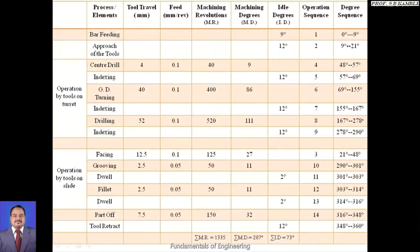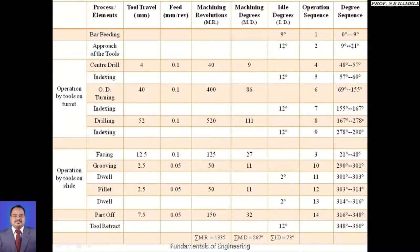Continuing: grooving (10th), dwell of grooving (11th), fillet (12th), dwell of fillet (13th), then parting off as the last operation. For the degree sequence column, we add machining degrees and ideal degrees cumulatively. Bar feeding: 0 to 9°; approach of tool: 9 + 12 = 21°; facing starts at 21° and ends at 21 + 27 = 48°.